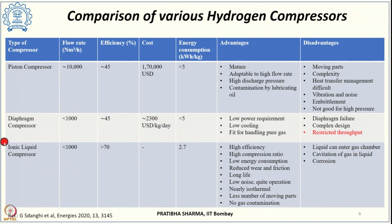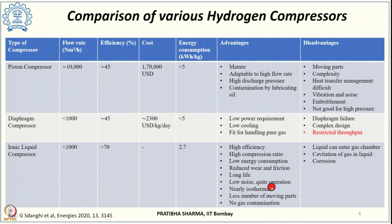The liquid ionic or ionic liquid compressor achieves around 1000 normal meter cube per hour with very high efficiency of 70 percent and very low energy consumption of about 2.7 kilowatt hour per kg due to near-isothermal operation. Advantages include high efficiency, higher compression ratios, lower energy consumption, reduced wear and friction, long life, quiet operation, and no gas contamination. The major problem is that liquid can enter the gas chamber, requiring condensation removal, and cavitation of gas into the liquid and associated corrosion are also possible.